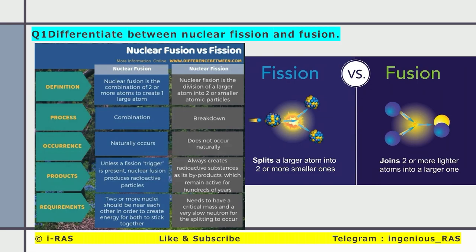Our first question says to differentiate between nuclear fission and fusion. It is a very basic question. Nuclear fusion means combination — combination of two or more atoms to create a large atom. Whereas nuclear fission means breakdown of larger atoms into smaller atomic particles. A very famous example of nuclear fusion is the sun — it naturally occurs. And a famous example of nuclear fission is the atom bomb.